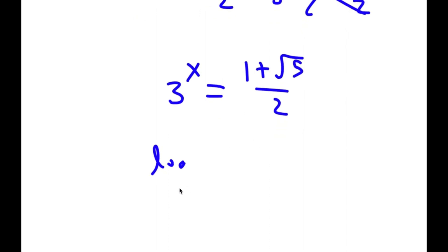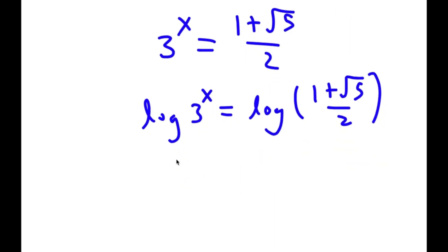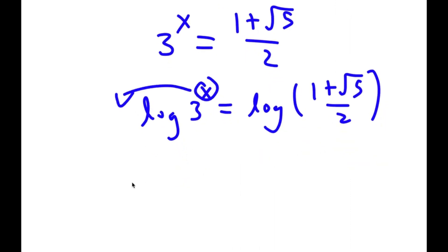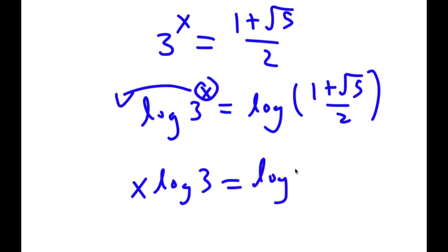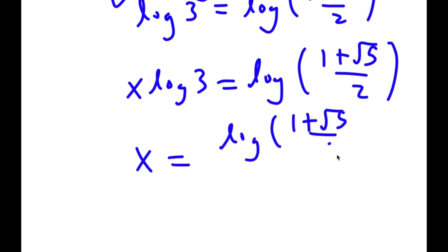To solve this, I'm going to take the log on both sides. So I have log 3 to the power of x equals log of (1 plus the square root of 5) over 2. Moving x to the front and dividing both sides by log 3, I get x is equal to log of (1 plus the square root of 5 over 2) over log 3.